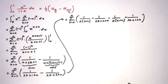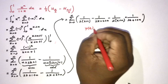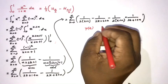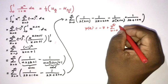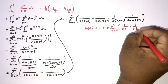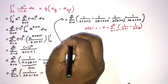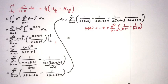I will now use the digamma function relation. We know the digamma function is the derivative of the natural log of the gamma function. The digamma function equals minus the Euler-Mascheroni constant gamma plus the sum from k equals 0 to infinity of 1 over (k plus 1) minus 1 over (k plus c). We combine this with our sum.